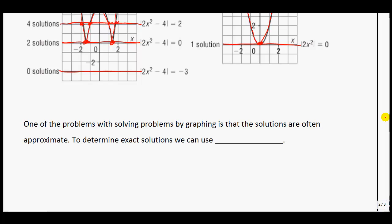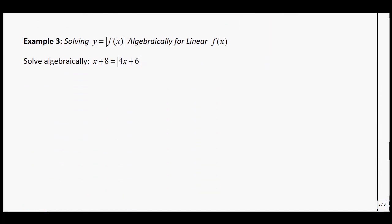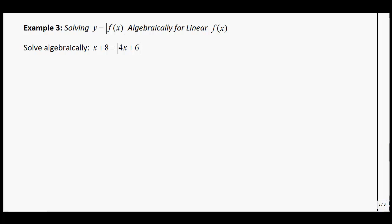One problem with solving by graphing is that solutions are often approximate — for example, in example 2 we had to say x was approximately 1.4. If we want exact solutions, we can use algebra. For linear absolute value equations, we take what is inside the absolute value signs and use it to define our cases.